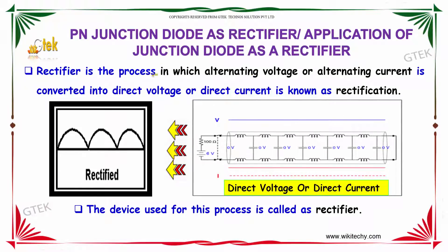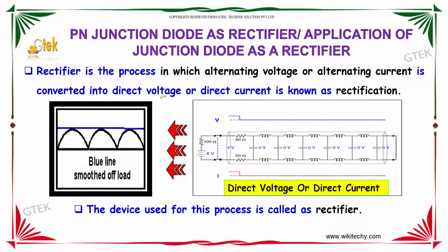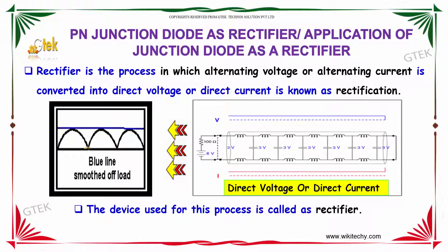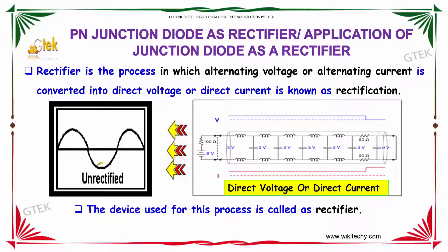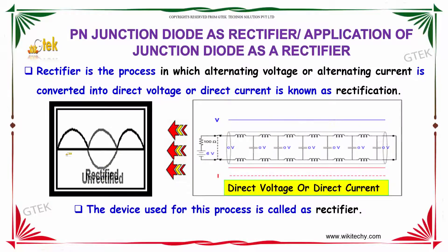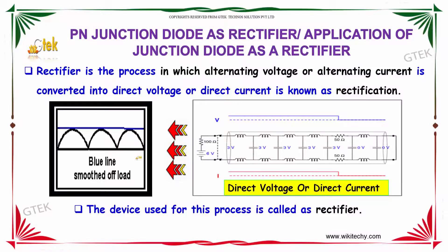What is a rectifier? A rectifier is the process in which the alternating voltage or alternating current is converted into direct voltage or direct current, and this is known as rectification. You can see the alternating voltage unrectified. This becomes a rectified one. This is referred to as rectification.